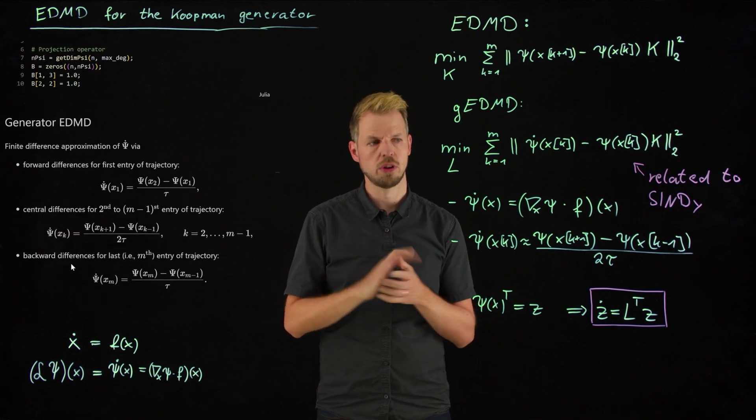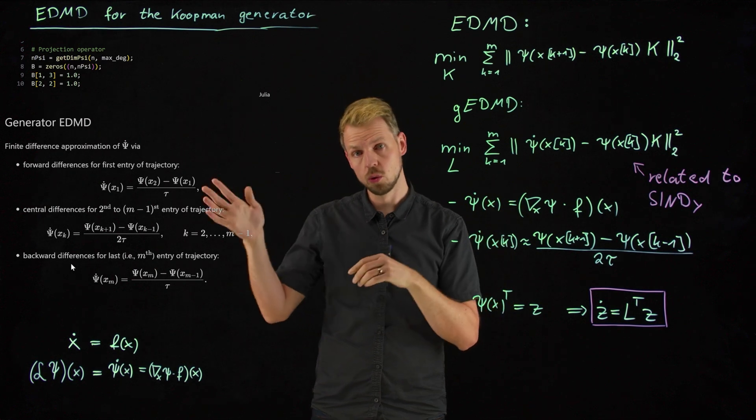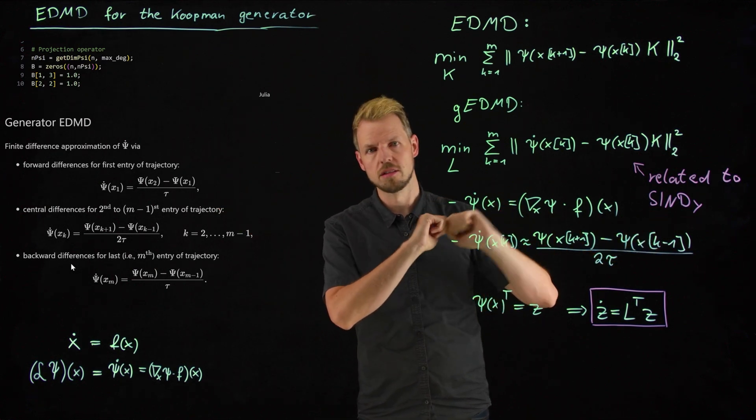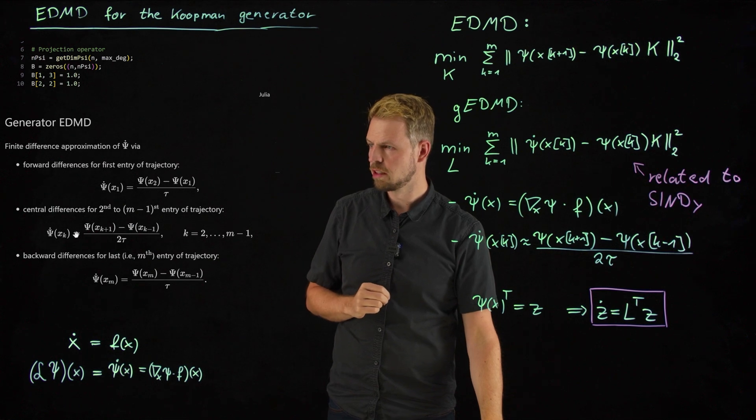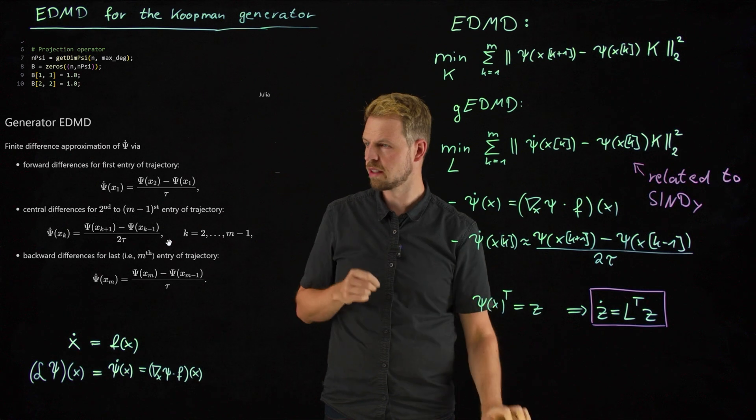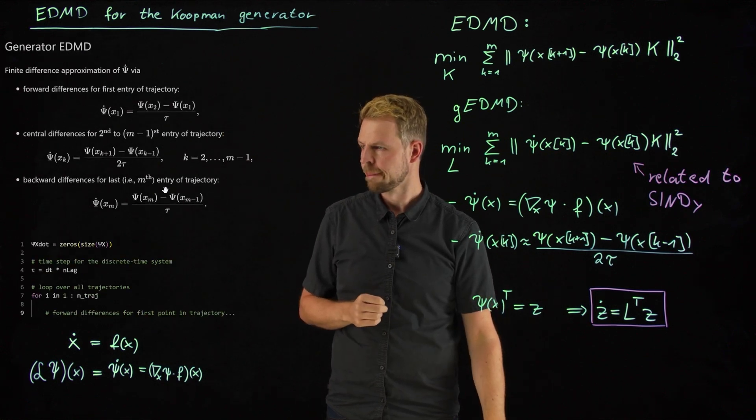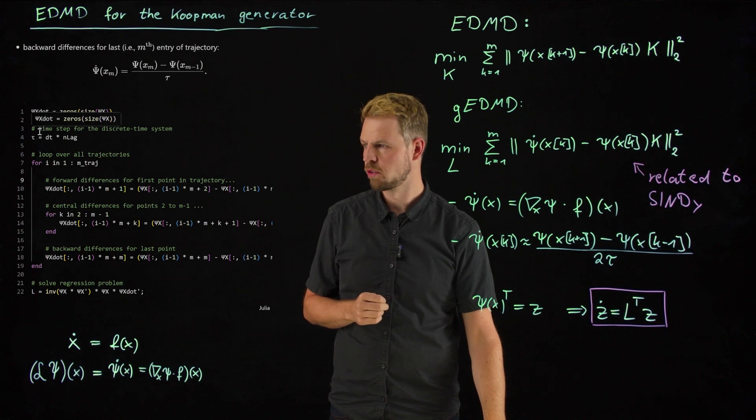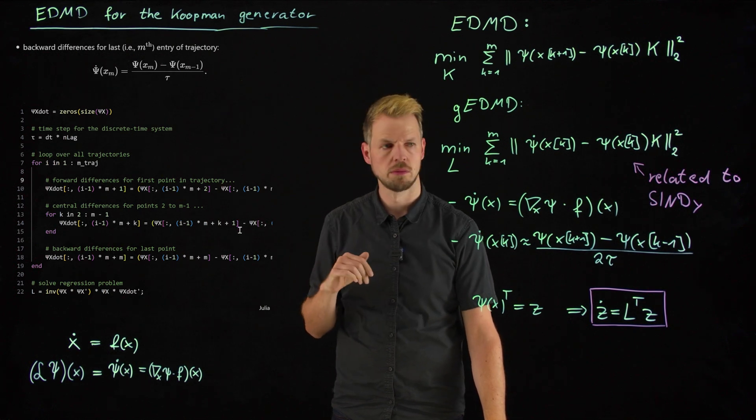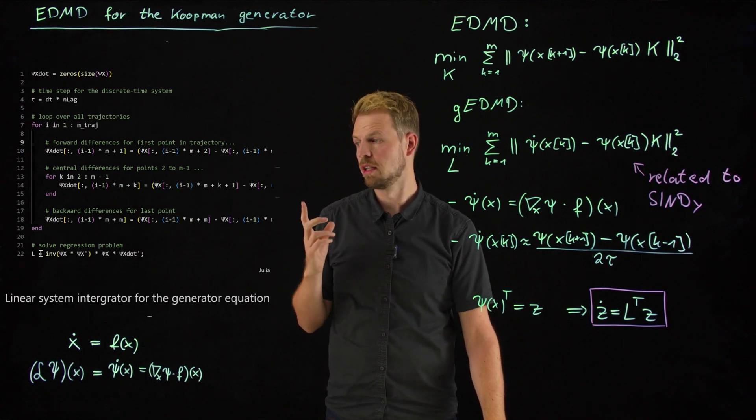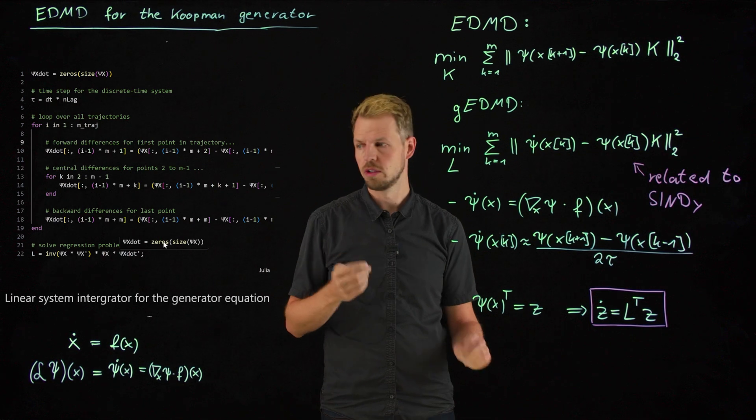And then for the generator EDMD, we need to compute derivatives. As I said, one has to know the right hand side here, and one has to know derivatives of the basis functions, which we do in this case. But for simplicity, I'm simply taking this finite differencing. I'm also not considering noise, so the finite differences should be good enough. And what I'm doing is, the middle line here is really the central differences that I have defined here. And then in the top and bottom rows, I'm taking forward or backward differences, because I do not have a left or right point in this case. And so what I'm doing here is, I'm now creating this psi x dot matrix, which precisely does this. So I'm taking the psi at x k plus one and then minus k minus one divided by two tau. So exactly what I've defined above. And then the regression problem is exactly the same as before, just where the psi y was, is now the psi x dot. And so very easily transferred.